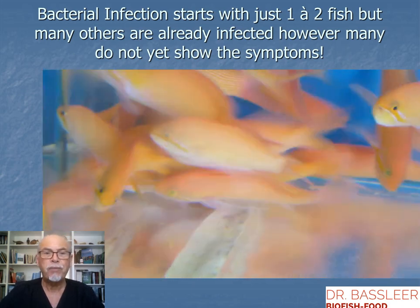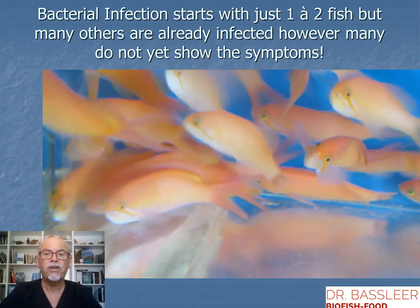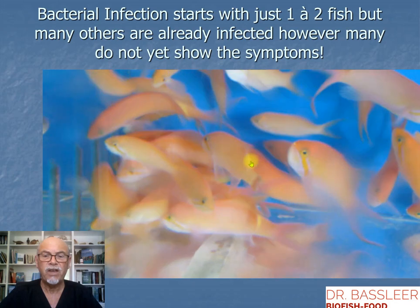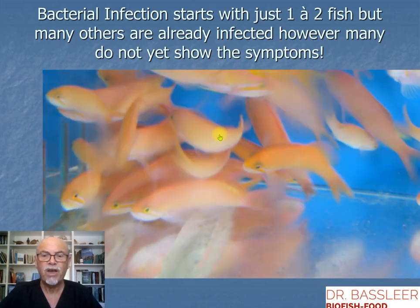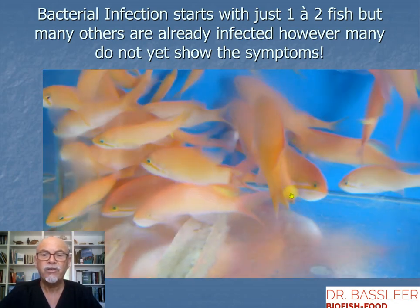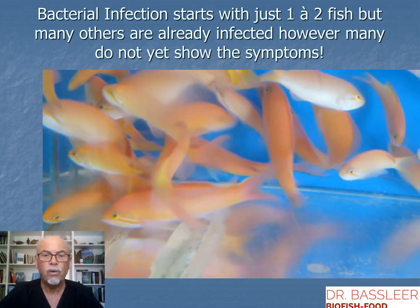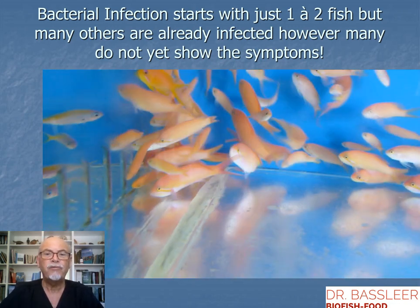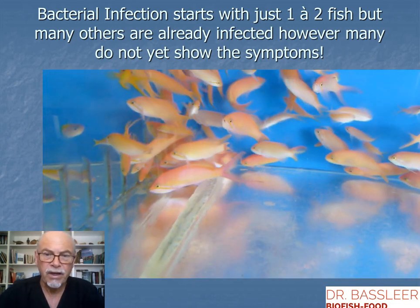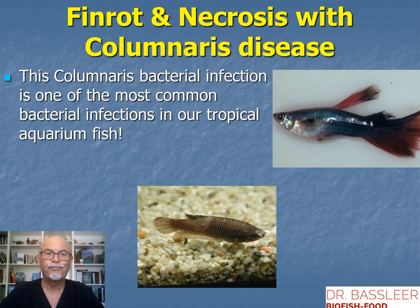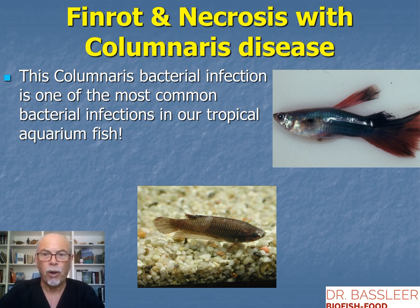Here's an example: a bacterial infection that starts on the tail of these Anthias. One fish has a very heavy infection. Here a second one is starting to show signs, while others have very few signs of infection. So try to check as soon as possible on your diseased fish. Here is fin rot and necrosis — an example of columnaris disease. On this guppy, you see the tail rot and the dorsal fin is also rotted away, with loss of color.